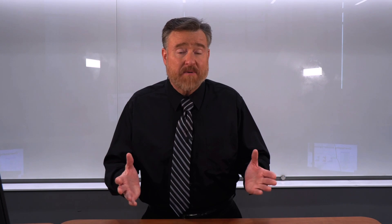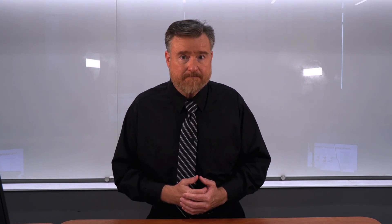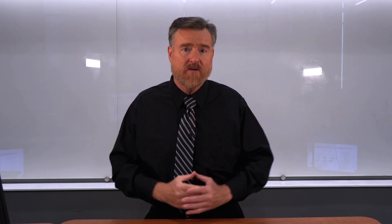Here are some other examples of overlapping answer options discovered in the real world. In this case, you're asked to select 1 to 1.5, 1.5 to 2. In every case there is overlap. The amount of error that is going to be generated in this question is astronomical — it's probably not even going to be a useful question.